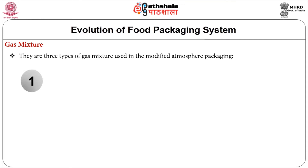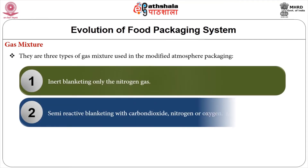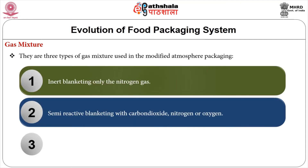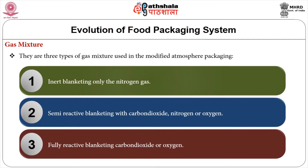Now we will look at gas mixtures. There are three types of gas mixtures used in modified atmospheric packaging. One: inert blanketing, using only nitrogen gas. Two: semi-reactive blanketing, with carbon dioxide plus nitrogen, or oxygen plus carbon dioxide, or oxygen plus nitrogen. Three: fully reactive blanketing, using carbon dioxide alone, or carbon dioxide and oxygen.